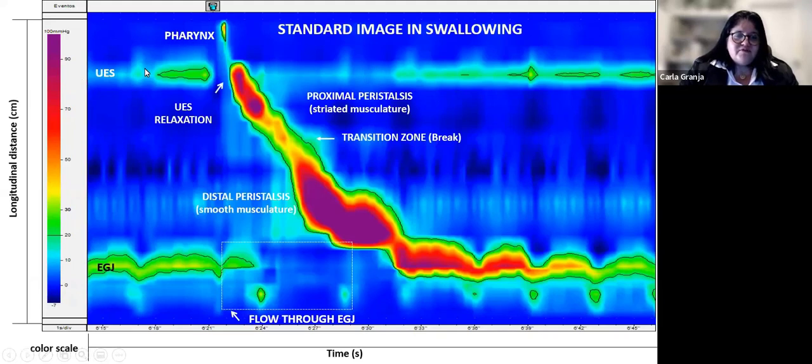Here is the standard image in swallowing. Here is the upper esophageal sphincter and its opening when we have the swallowing. The proximal peristalsis where predominates straight musculature. The cold break in the transition zone. And the distal peristalsis where predominates smooth muscles. The esophageal gastric junction has a peculiar movement when the opening of the swallow. We have the relaxation and the flow through the esophageal gastric junction. And then we have an elevation of the pressure that is physiological and means the esophageal gastric junction reaction post swallowing.